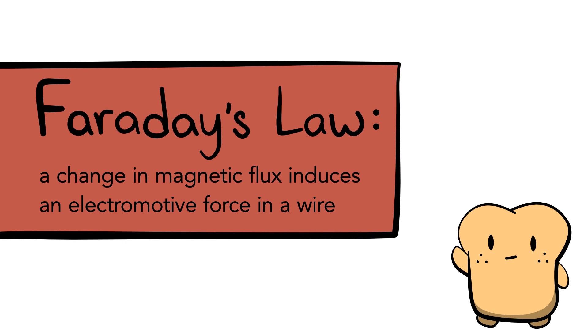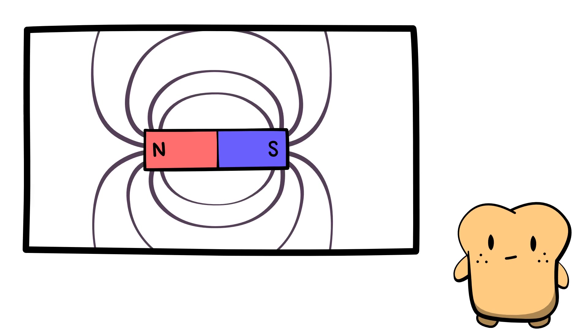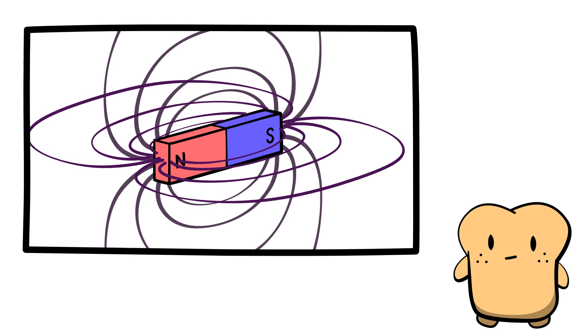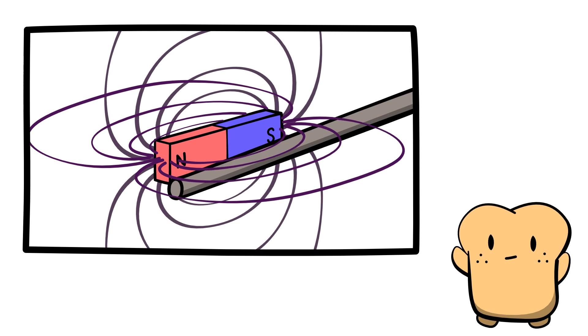According to Faraday's law, a change in magnetic flux induces an electromotive force in a wire. If you were to draw a magnetic field using lines, you can think of magnetic flux as the number of lines going through an area. The more field lines go through a wire, the greater the magnetic flux.